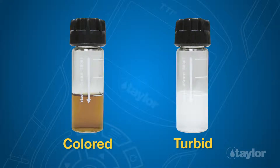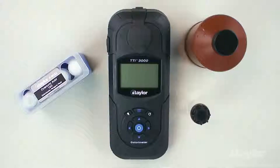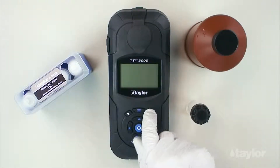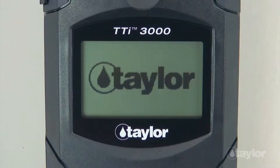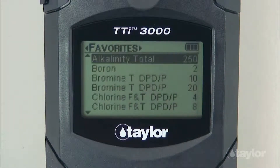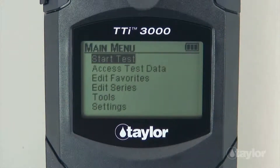Note: if the sample water is colored or turbid, it must be filtered before performing the test. To begin, press the power button to turn on the colorimeter. Press the main menu button and select a test menu.